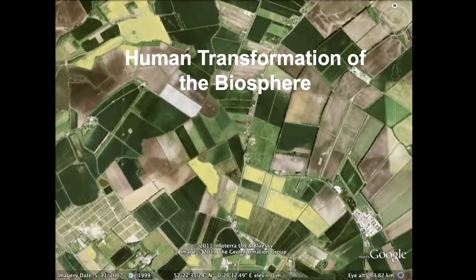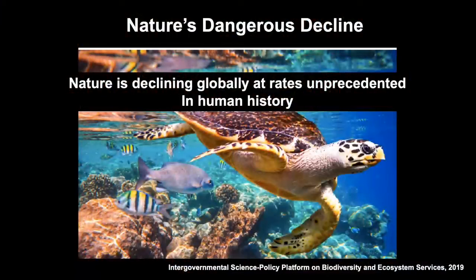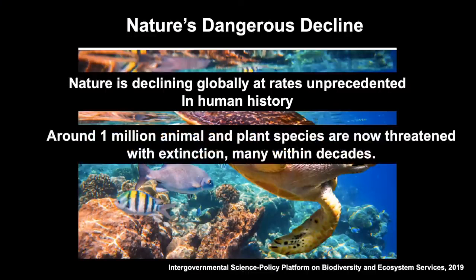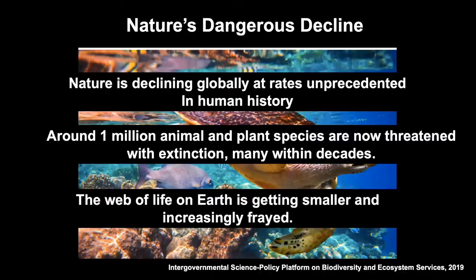We also need to look at the biosphere, because the other big part of the Earth's system is the living part. A big synthesis report done in 2019 looked at all the evidence of how the biosphere is changing. One important conclusion: nature is declining globally at rates unprecedented in human history. Just as in climate, we are driving extinctions, changing land, polluting the ocean faster and faster. About 1 million animal and plant species are now threatened with extinction, many within decades. That would amount to the sixth great extinction event in the entire history of Earth. The web of life on Earth is getting smaller and increasingly frayed. You can see that here in Australia with land use change, bleaching of the Great Barrier Reef, massive fires — it's hammering our biosphere on this continent.